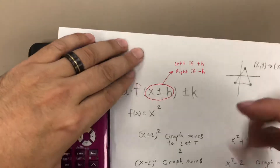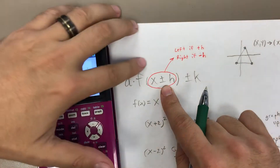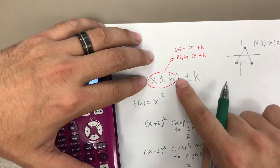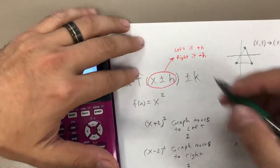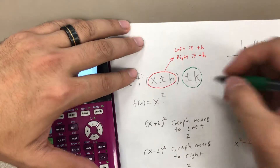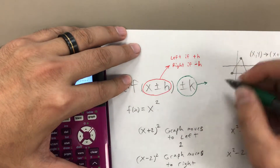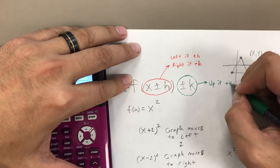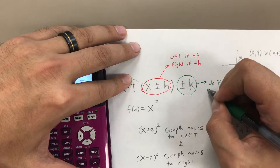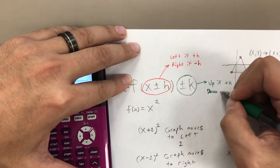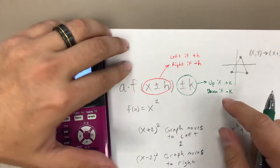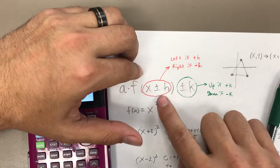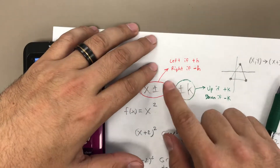This tells me that for any function, if I have addition or subtraction inside the parentheses — inside a square, a square root, or an absolute value — it moves the graph left or right. But if I have addition or subtraction outside of the function, it affects it vertically — moving it up or down by some amount. So adding some value K outside moves the graph up, and subtracting some value K moves the graph down. You need to understand where the addition is happening before you can tell if it moves up or down, or left and right.